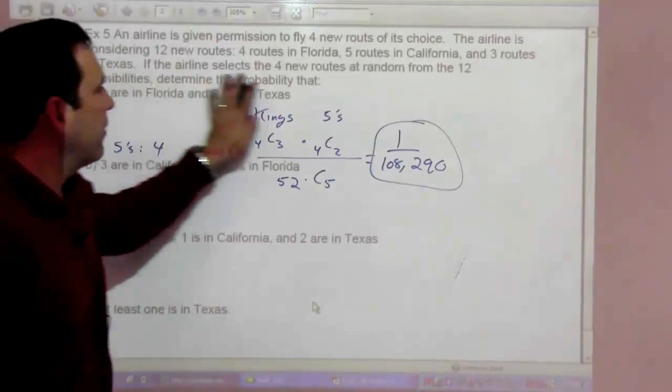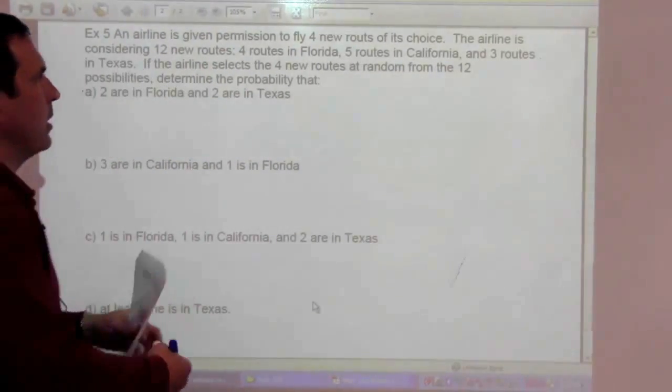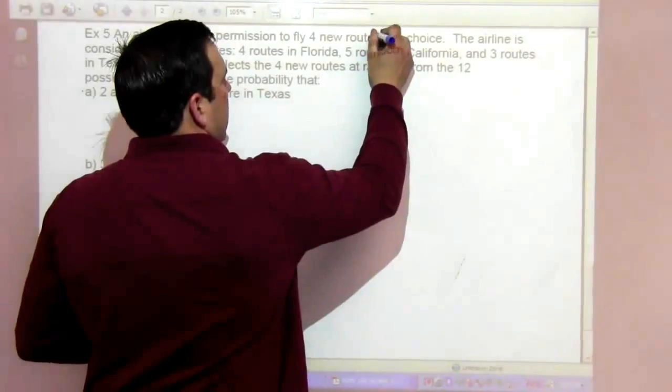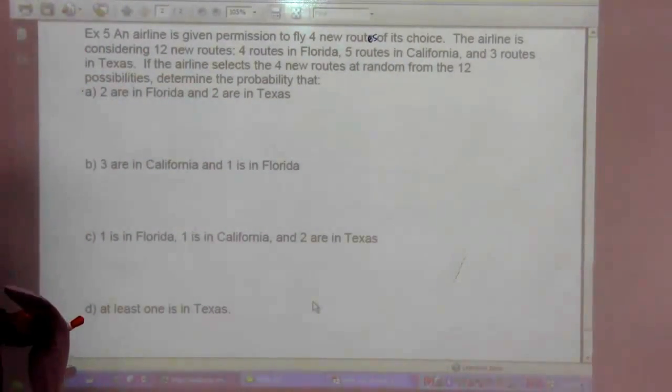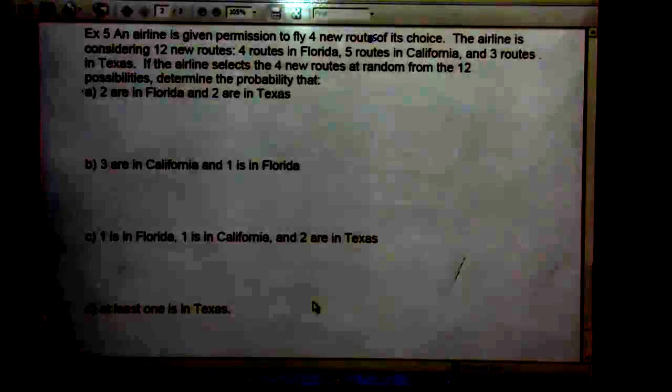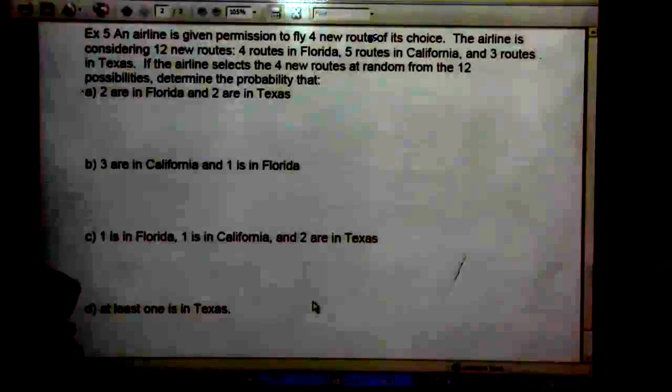An airline has given permission to fly 4 new routes of its choice. The airline is considering 12 new routes: 4 in Florida, 5 in California, and 3 in Texas. The airline selects the 4 new routes at random from the 12 possibilities. Determine the probability that 2 are in Florida and 2 are in Texas.